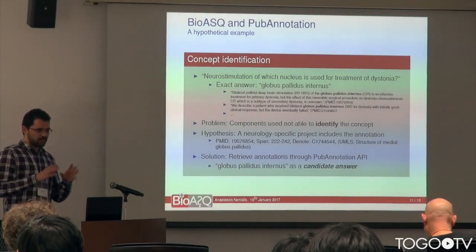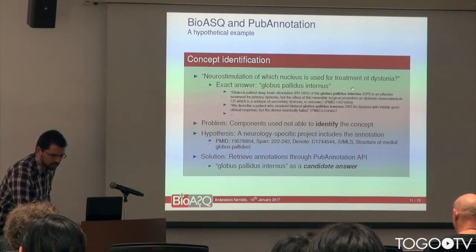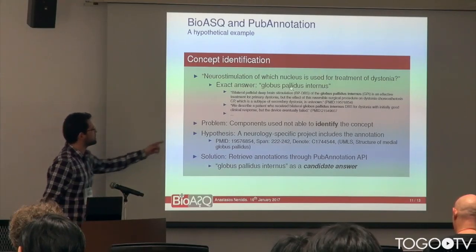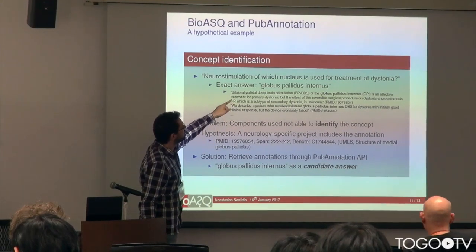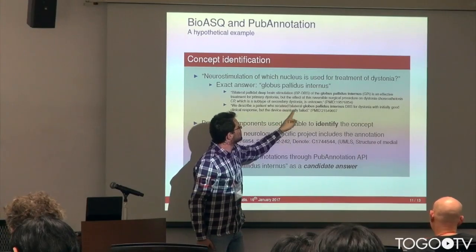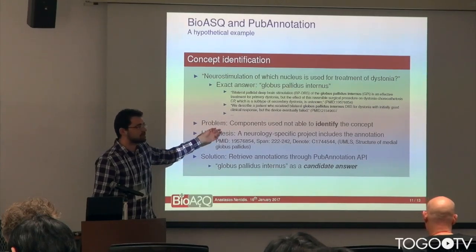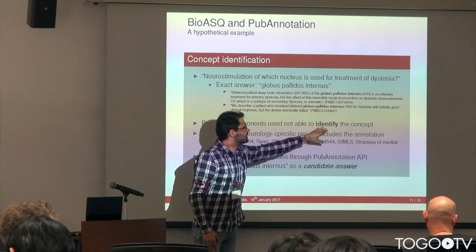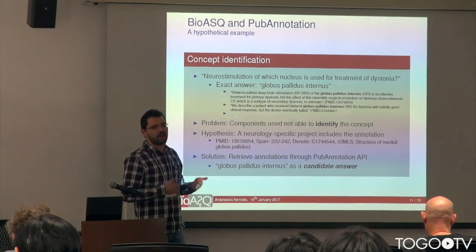To make all this a bit more concrete, I have a real example from the OAQA system. We have a factoid question and its exact answer. As we can see in the relevant snippets provided for Phase B, the answer is present in the snippets. The problem is that the system could not identify those three words as an entity — the components used didn't identify it, so it was not even a candidate answer.